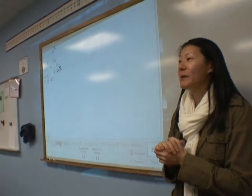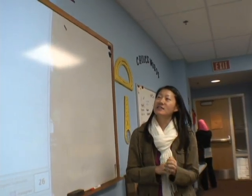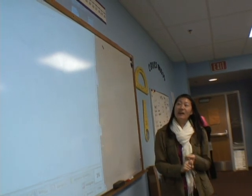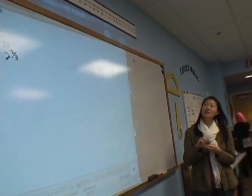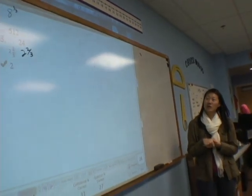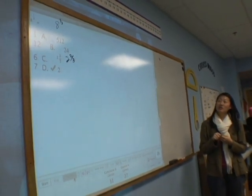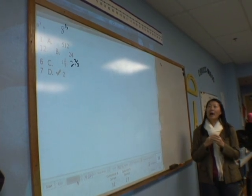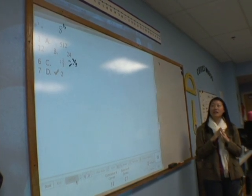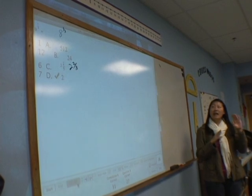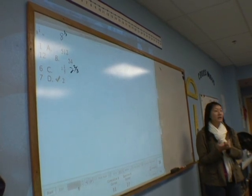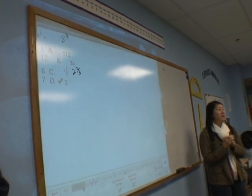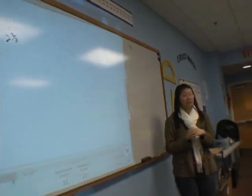Let's talk about this and look at this problem together. It says a to the one-third power: A is 512, B is 24, C is 2 and 2 thirds, and D is 2. I heard somebody say A is too big. Why is A too big? Pedro, tell me why is A too big?